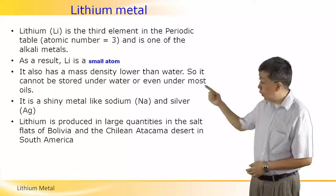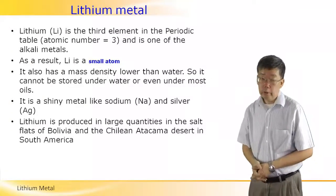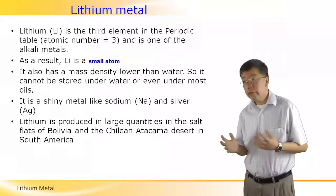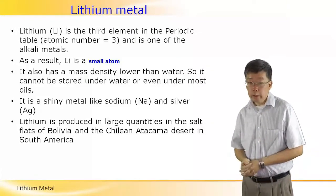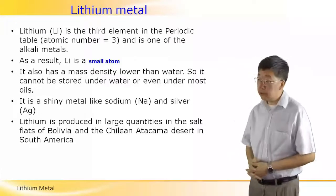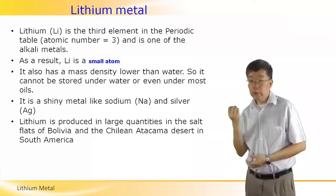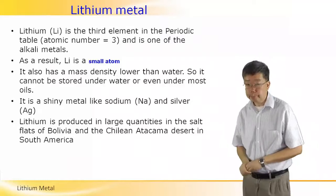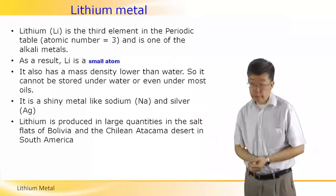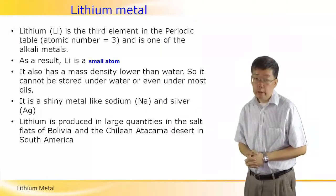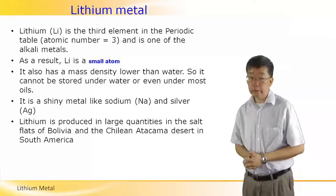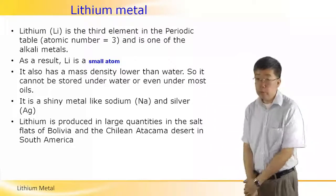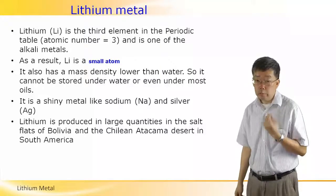This slide provides a little bit of background on lithium metal. Lithium has a chemical symbol of Li, and it's the third lightest element in the entire periodic table because it has an atomic number of three — there are just three protons in the nucleus of every lithium atom. Lithium is the first metal in the alkali series of metals, making it a small atom with a very low mass density.